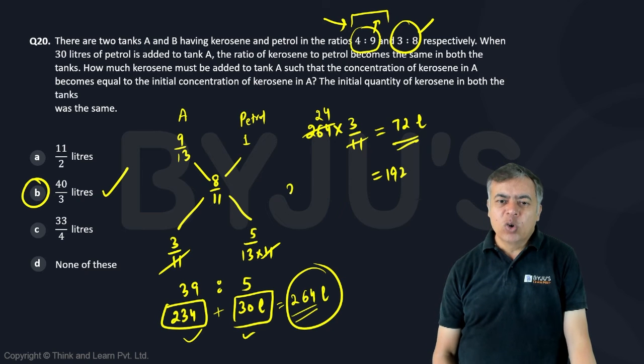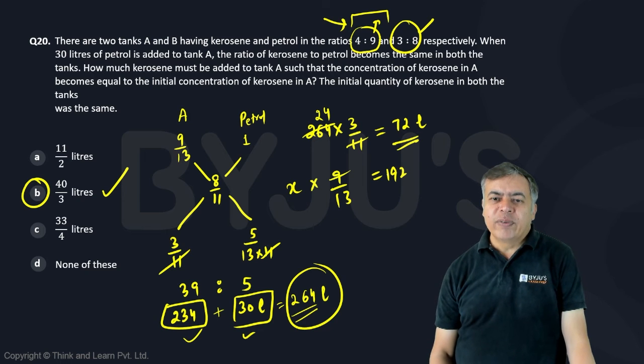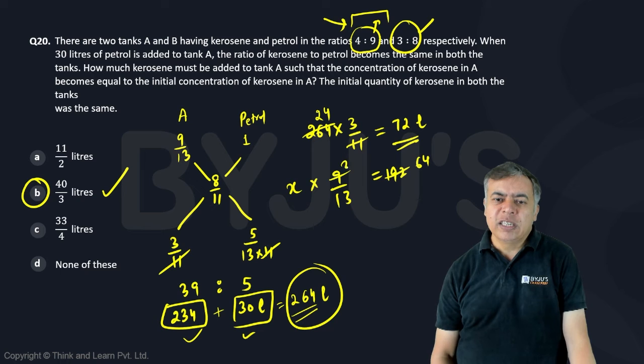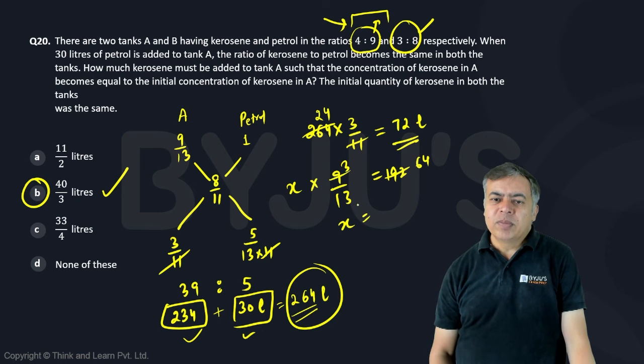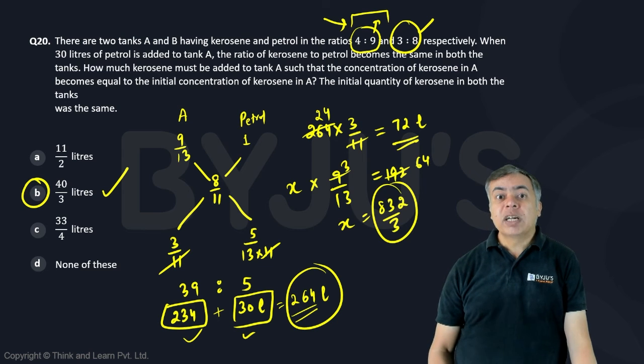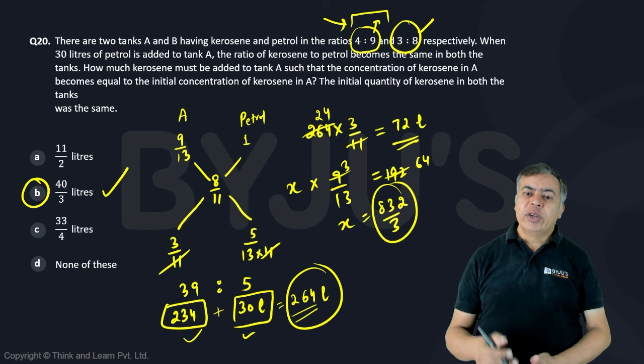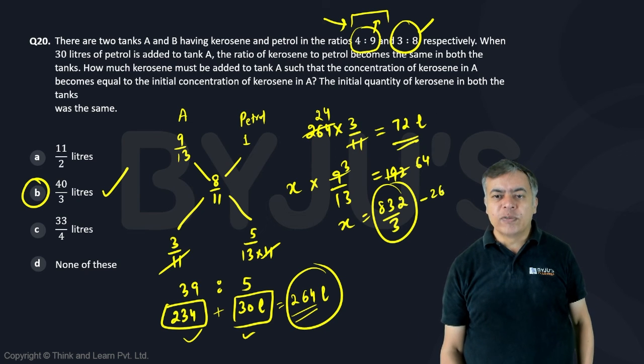Now petrol should be, out of the total petrol should be 9 out of 13. If I cancel with 3, it is 3 into 6, 4, so 3 and it will become 13 into 4, 52, 13, 6, 78 and 5, 83 by 3. So this must be the total, this must be the new total.